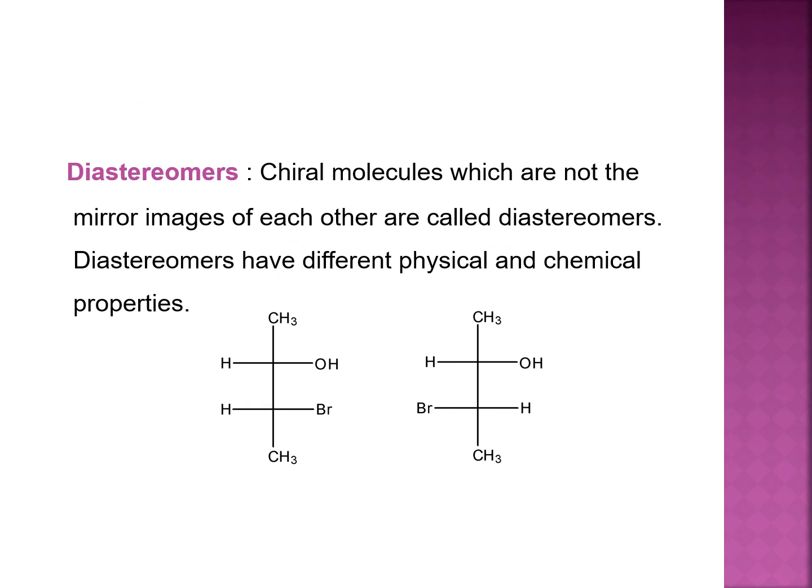Now, what are diastereomers? Stereoisomers that are not mirror images of each other are called diastereomers. Diastereomers have different physical and chemical properties. This is the example of diastereomers.